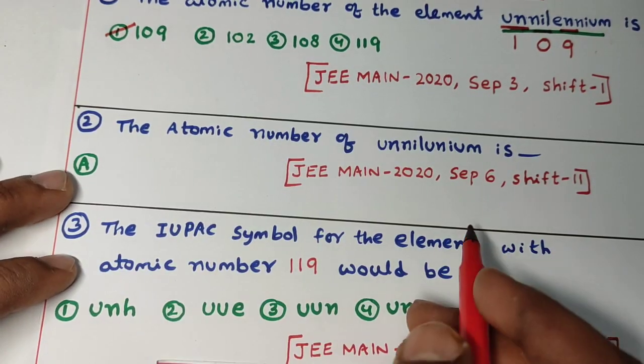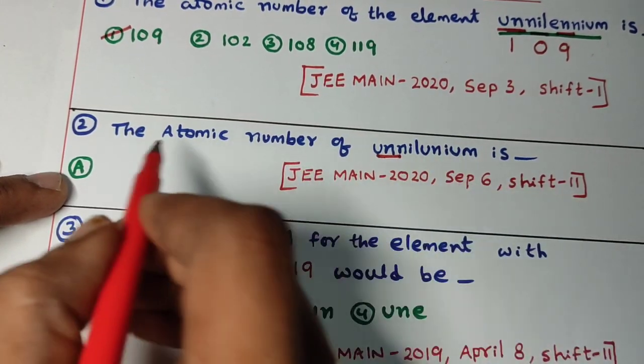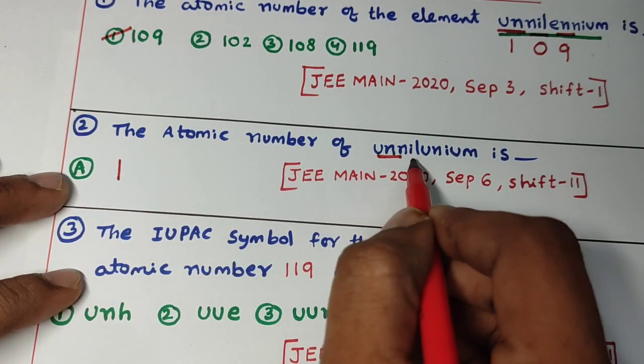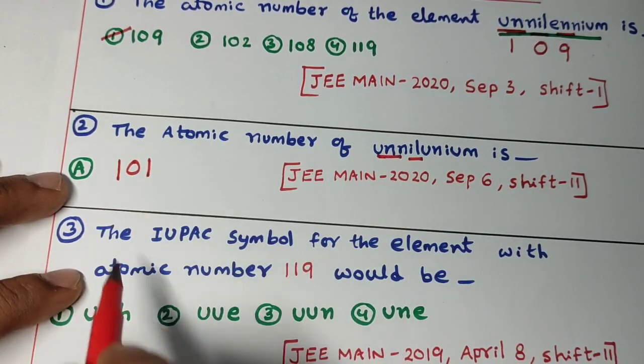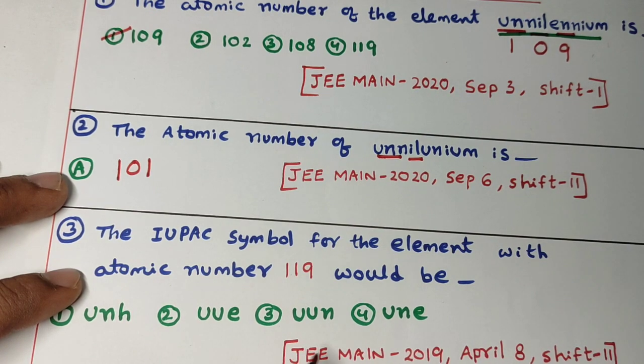Second question. Here, un is there. Un for 1. Nil, 0. Again, un, 1. So what is the answer? 101.